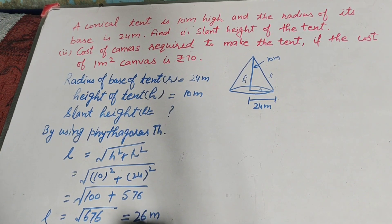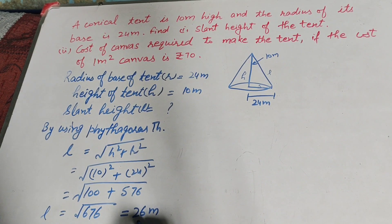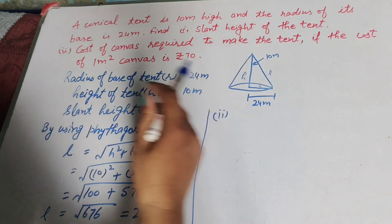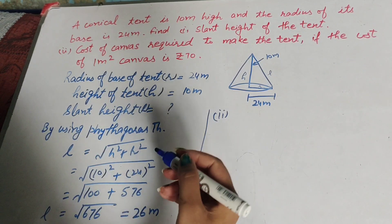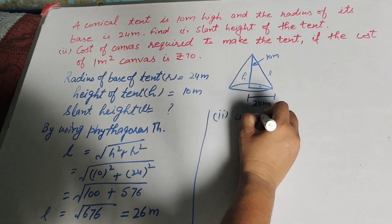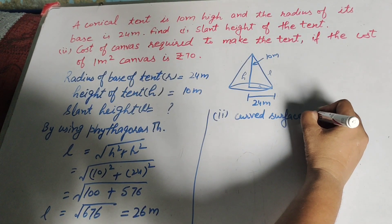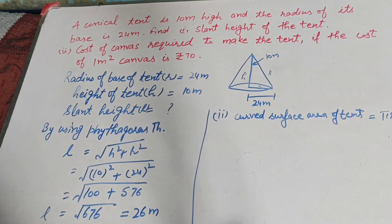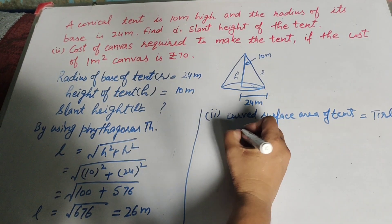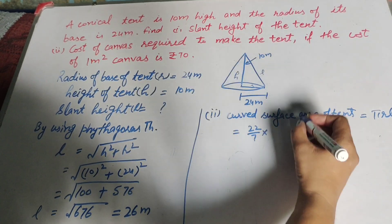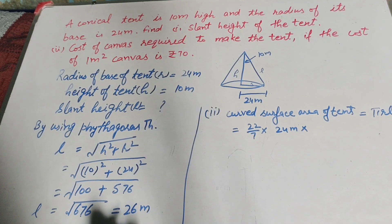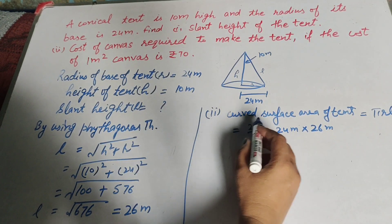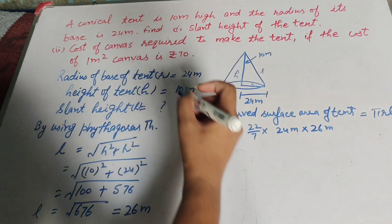Square root of 100 plus 576 is equal to square root of 676, so the slant height of the tent is 26 meters. Now we find the curved surface area of the tent to move to the second part — finding the cost of canvas required. The curved surface area of the tent, which is in the shape of a cone, uses the formula pi r l. Here pi is 22 over 7, r is 24 meters, and l is the slant height 26 meters.